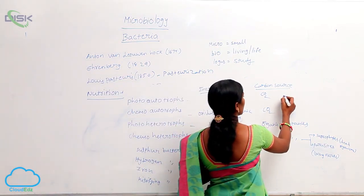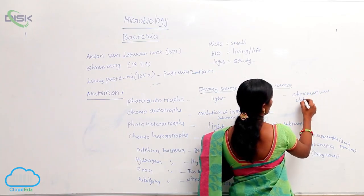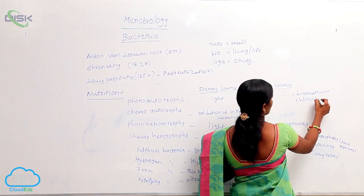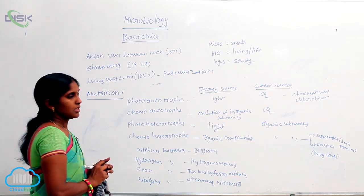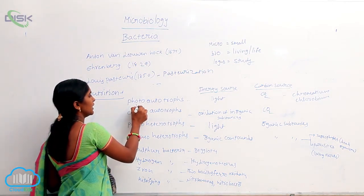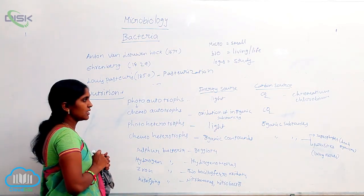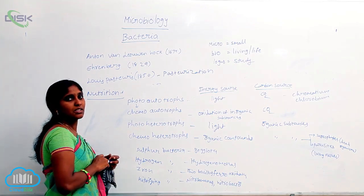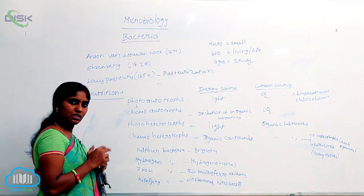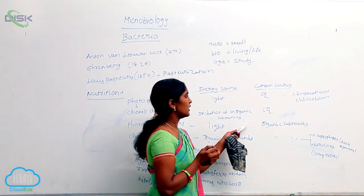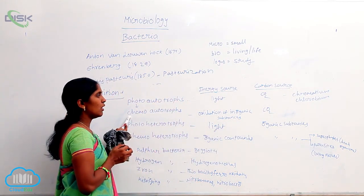Examples of photo-autotrophs are Chromatium and Chlorobium. The next type is chemo-autotrophs. Here, instead of light, chemical energy is used. The chemical energy is gained through oxidation of inorganic substances, which releases energy. That released energy is obtained by the bacteria. The carbon source for their nutrition is from CO2, so they are called chemo-autotrophs.